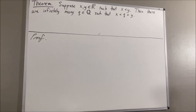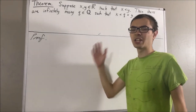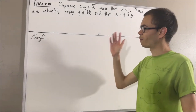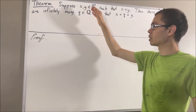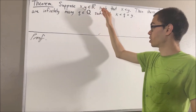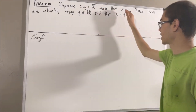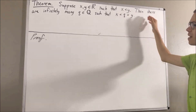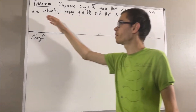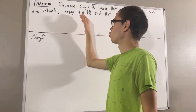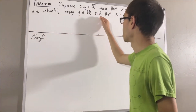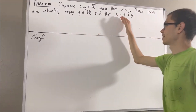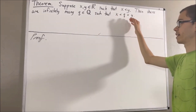Hello! In this video, we are going to prove the following theorem: Suppose x and y are real numbers such that x is less than y. Then there are infinitely many rational numbers q such that x is less than q is less than y.